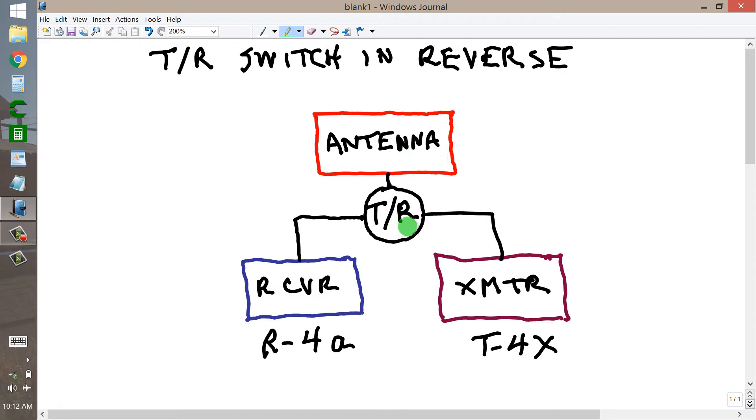What the TR switch does is allow you to receive signals when you're not transmitting as normal without the transmitter causing any interaction with the antenna. But as soon as you transmit, the power from the transmitter will cause components in the TR switch to protect the receiver from the output signal of the transmitter.